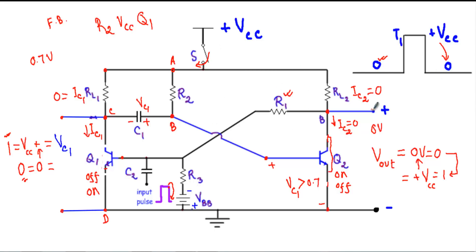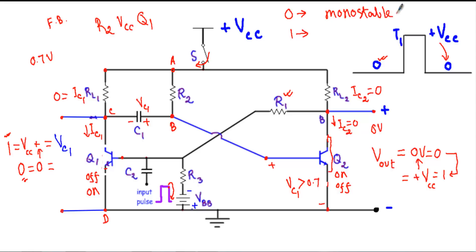This zero volt is its stable state, meaning the output voltage will retain its value at zero volt whatever the condition of the circuit. Since between zero and one only one state is stable, that is why it is known as a monostable multivibrator. And since the transition from one level to another requires only a single triggering pulse, that is why it is also known as a one-shot multivibrator.